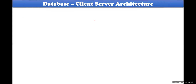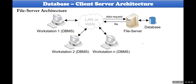Next is client-server architecture — how the three-schema architecture is implemented. In the initial days, databases were implemented using file server architecture, not client-server. Data was stored in the form of files, not in tables with rows and columns.